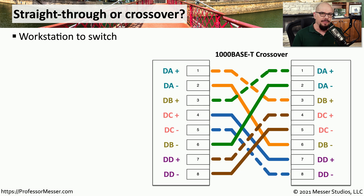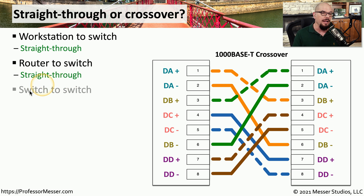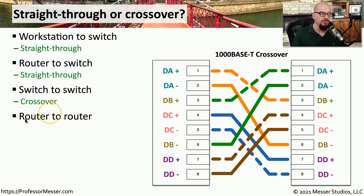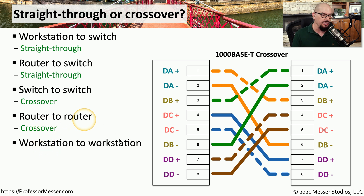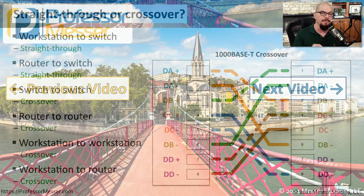So which cable do you use? Connecting a workstation to a switch is MDI to MDIX — use a straight-through cable. Connecting a router to a switch is also a straight-through cable. Connecting a switch to a switch involves two like devices, so use a crossover cable. Router to router is the same — use a crossover cable. Workstation to workstation also requires a crossover cable. And a workstation to a router, even though they seem different, are both MDI devices, so you would also use a crossover cable.